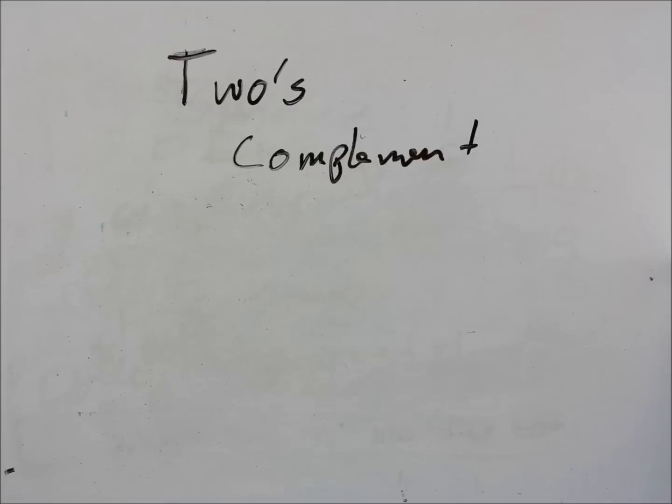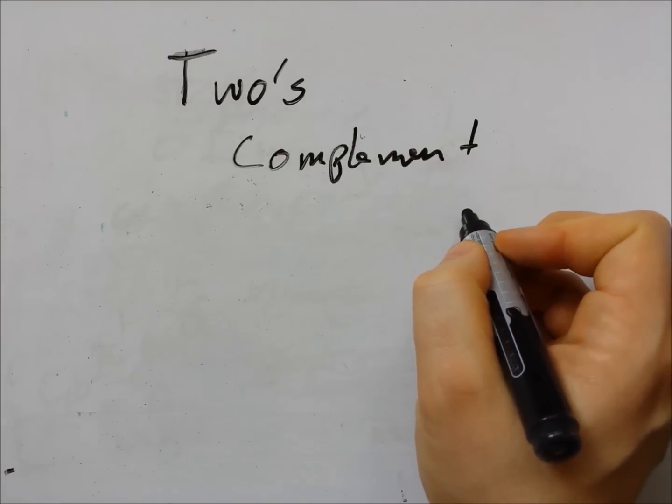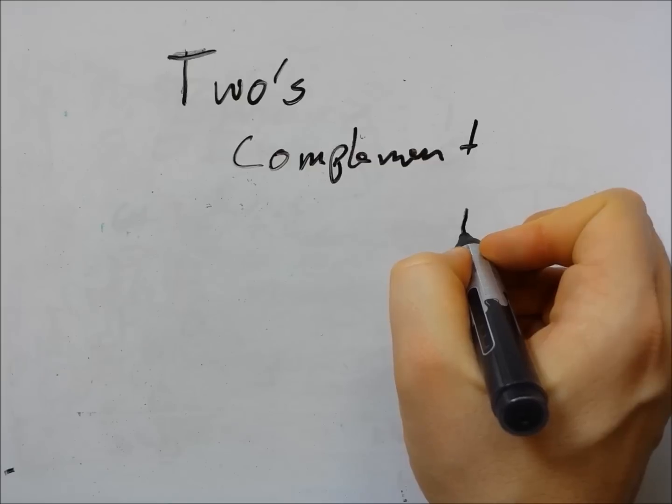Two's complement is a really simple system. All we have to do is make the most significant bit negative. Let me show you what I mean. In normal binary I'm going to just do this with four bits.